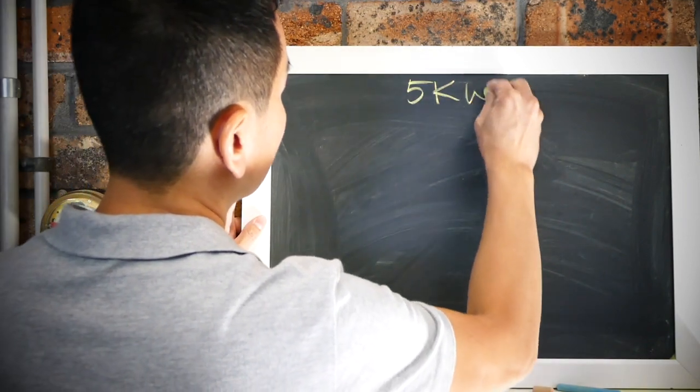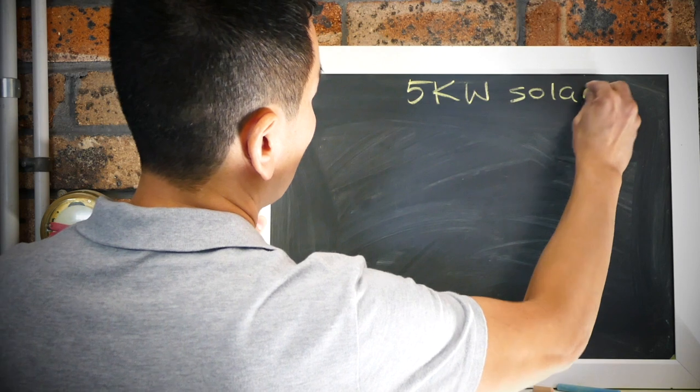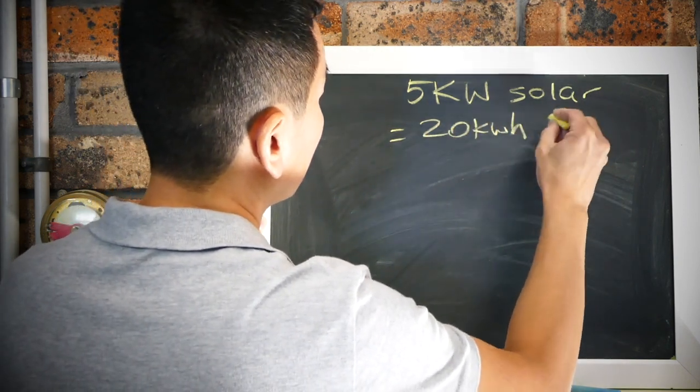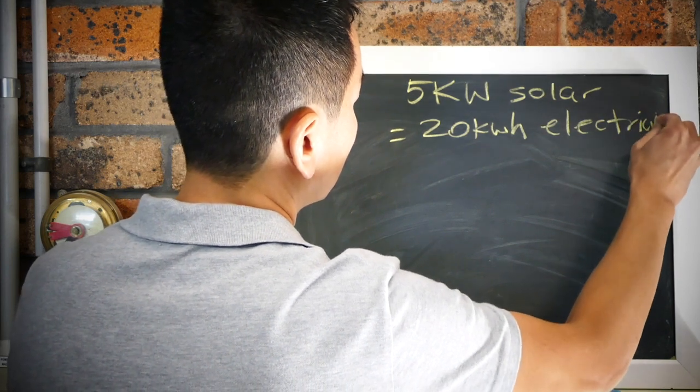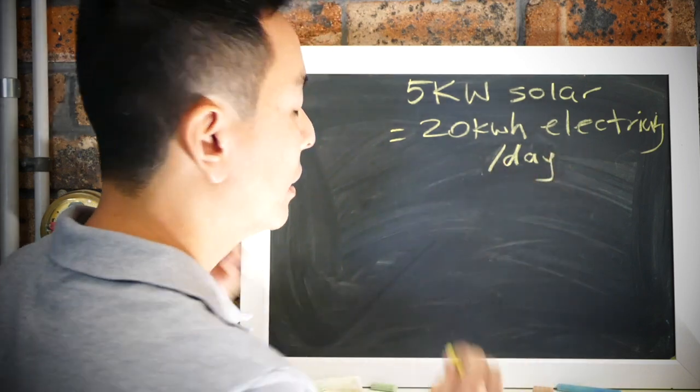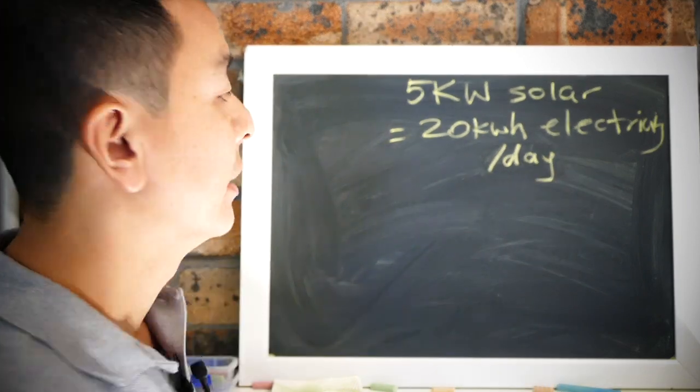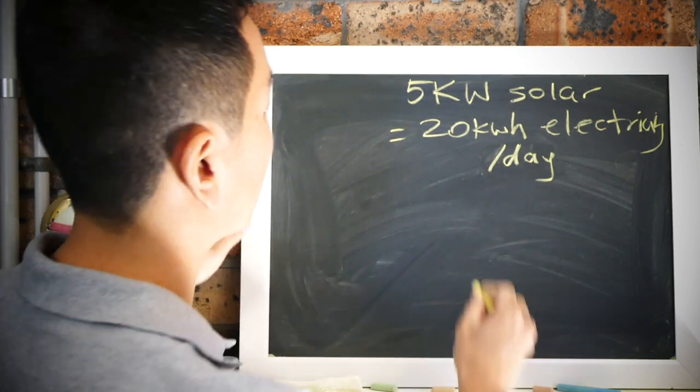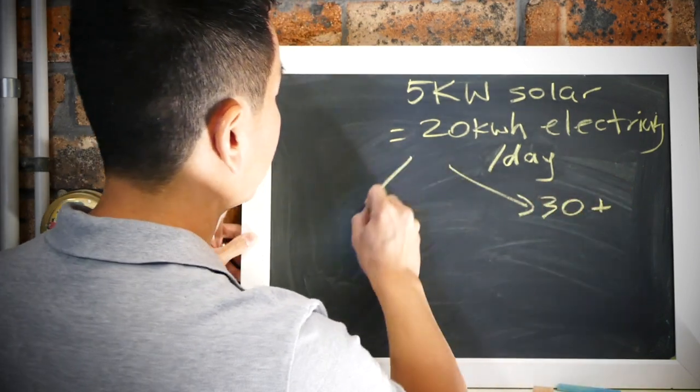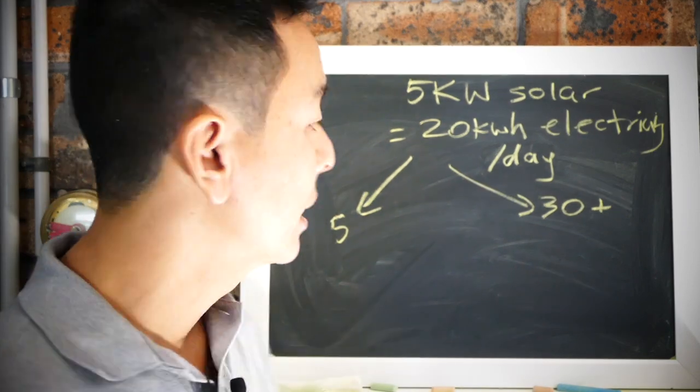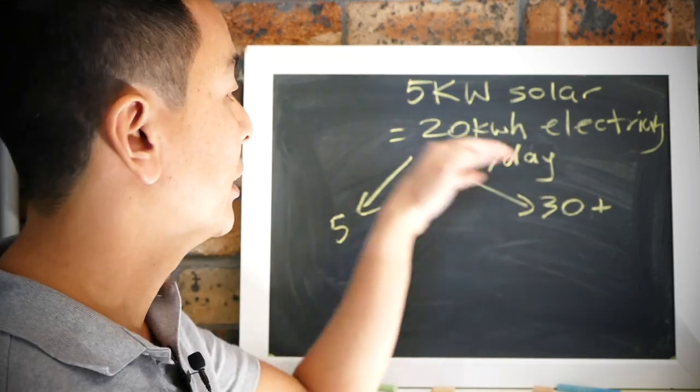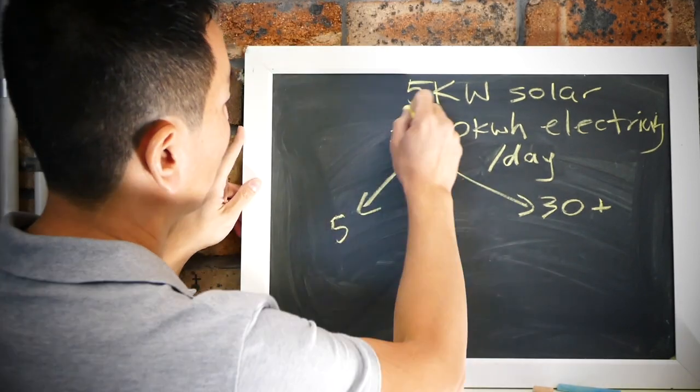A 5 kilowatt solar array on average is going to produce 20 kilowatt hours of electricity per day. Now I realize this is an average across the year, some days you're going to produce more, some days less. I understand how the Sun works, but on average across the year it's going to be 20 and that's the figure we're going to use for our calculation.